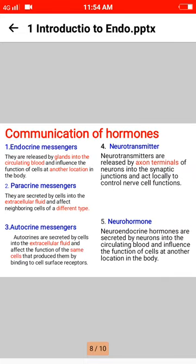Communication of hormones — endocrine messengers: they are released by glands into the circulating blood and influence the function of cells at another location in the body. Paracrine messengers: secreted by cells into the extracellular fluid and affect neighboring cells of different types. Autocrine messengers: secreted by cells into the extracellular fluid and affect the function of the same cells that produce them by binding to cell surface receptors.